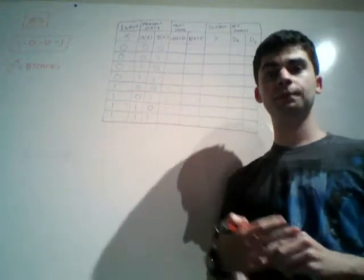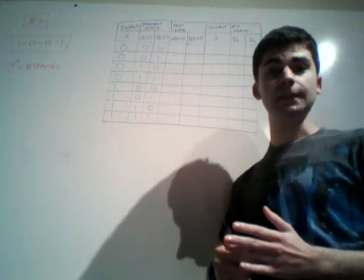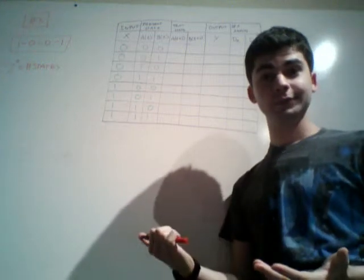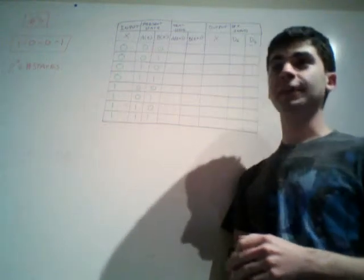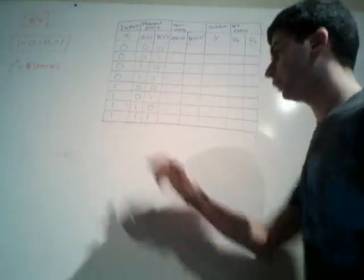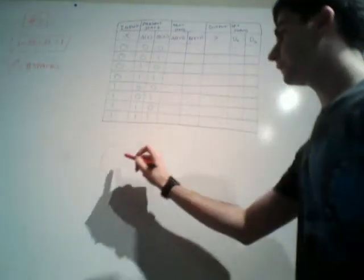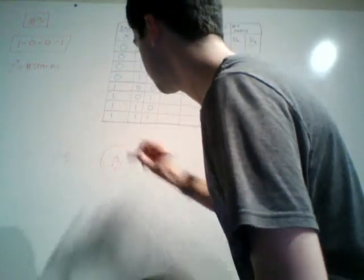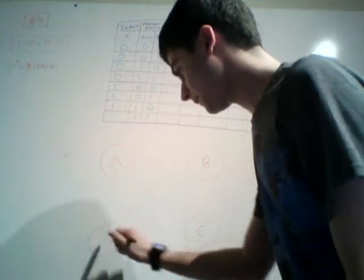The way I like to think of these problems is to start by asking: how many states do we need? We're always going to need at least one — we've got to start somewhere. So here's our first state; I'm going to call it state A. We need some place to go once we've recognized the first part of the sequence, so I'll make another state, state B. By that same logic, we need somewhere to go when we recognize the next part of the sequence — state C. And then we need somewhere to go for the next part, state D.